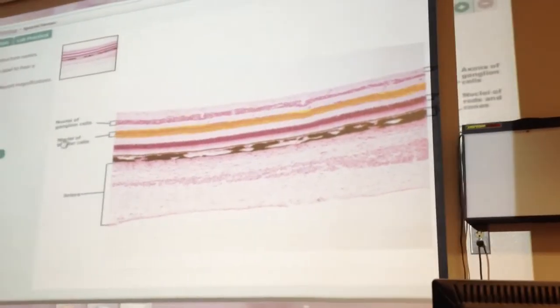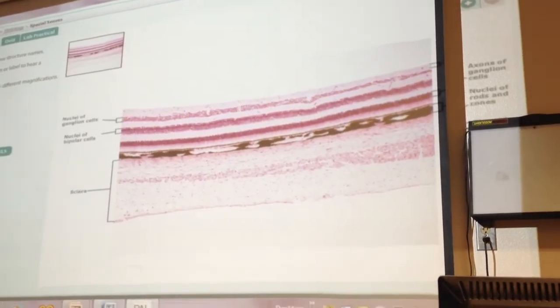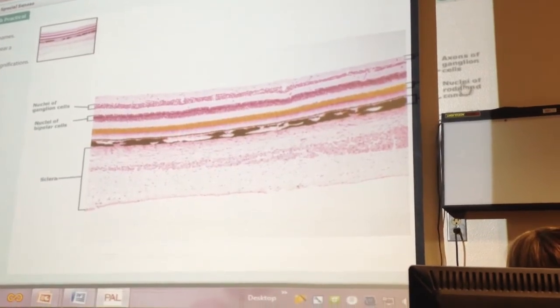So nuclei of bipolar cells, nuclei of ganglion cells. And way out here on the wall, nuclei of rods and cones.